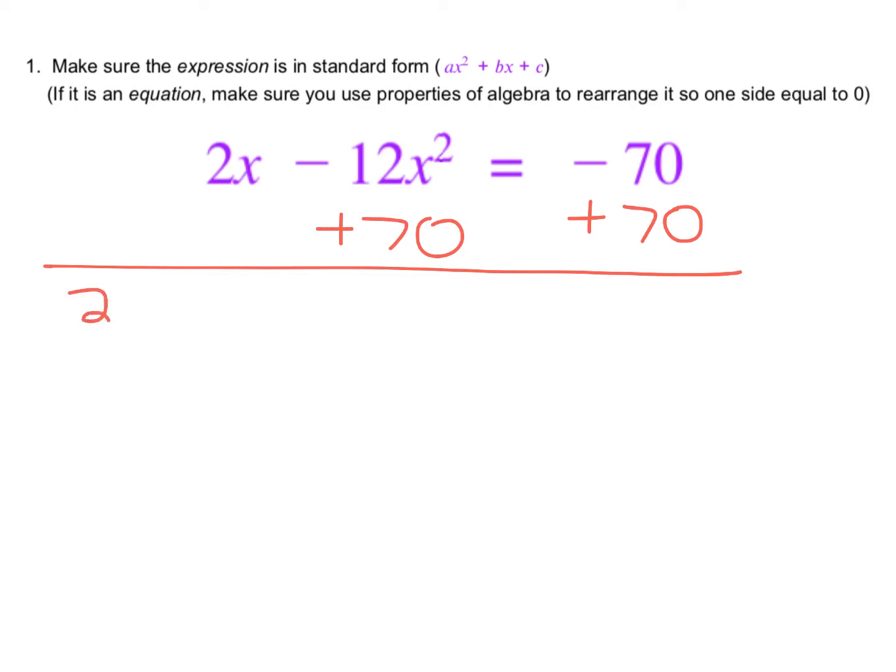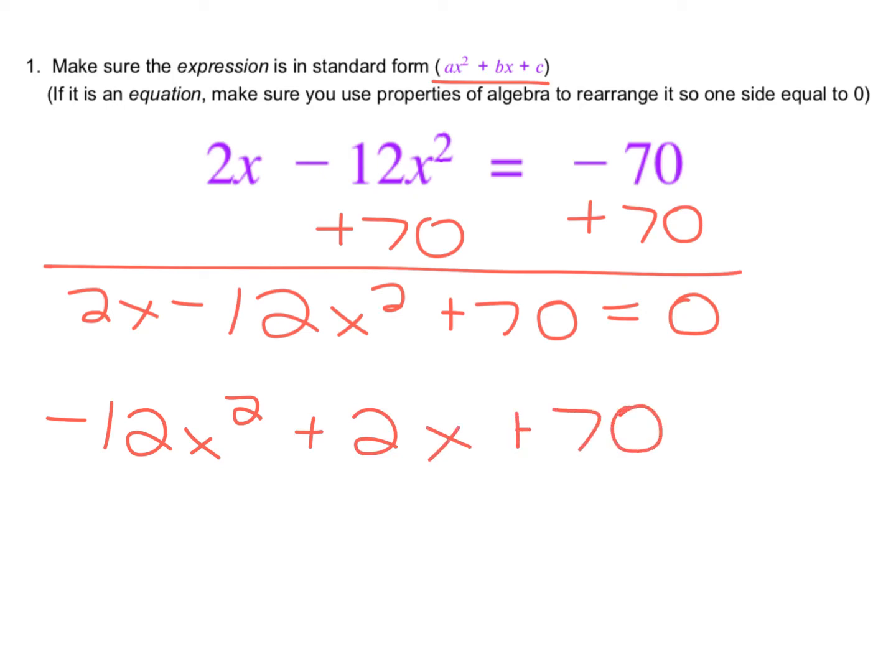So we get then 2x minus 12x squared plus 70 equals zero, and we need to rewrite it so that it's in standard form with the x squared term first. So we get negative 12x squared, then plus 2x plus 70 equals zero.